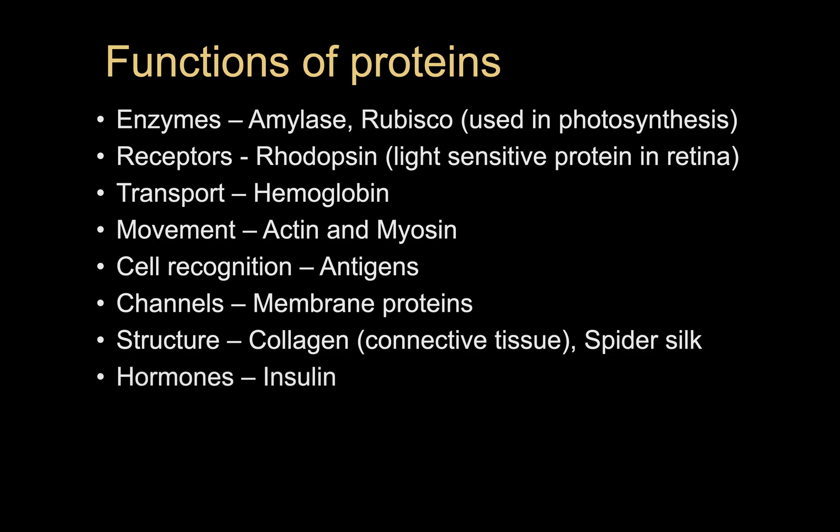Hormones are also proteins. Insulin that is used to lower blood sugar levels or blood glucose levels. And then also for protection, whereby we might have antibodies in our blood known as immunoglobulins.